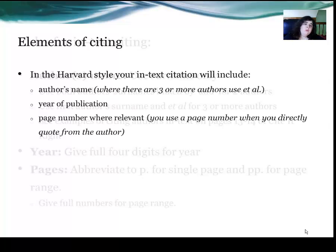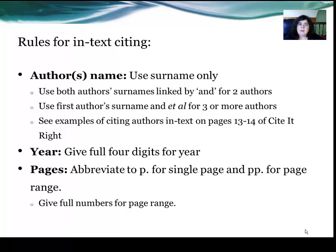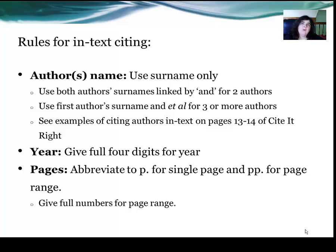So what are the rules for citing? The rules are that you use a surname only. For where there are one or two authors, you use a surname, and where you have two authors, you link them by the word 'and' — not the ampersand, but the actual word 'and'. Where there are three or more authors, you use the first author's surname and then 'et al.'